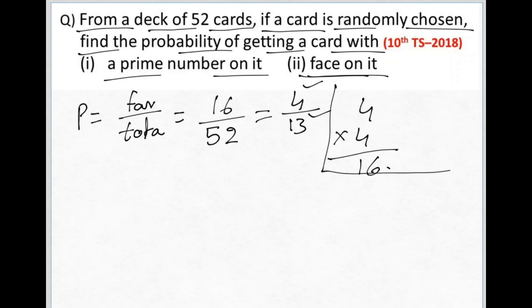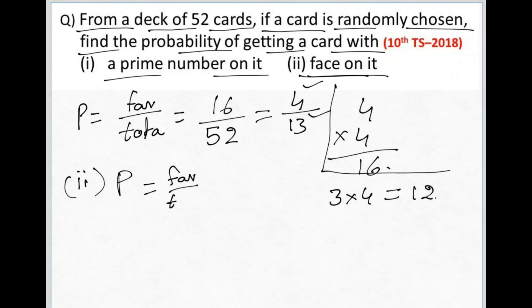The next one asks for a face card. We have already solved this — face cards are 3 into 4, which equals 12. So probability equals 12 divided by 52, and the answer is 3 by 13.